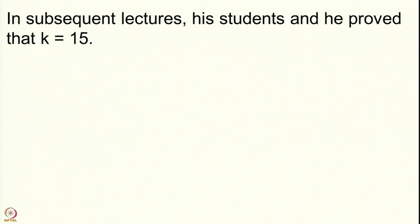Conway proposed this in his class, and remarkably in subsequent lectures he and his students proved that k is 15. They proved that if a positive definite form represents all integers from 1 to 15, then it is universal. For this computation you don't even need computers — if k were 100, you might need a computer, but checking only up to 15 is doable by pen and paper. This is a very remarkable theorem called the Conway–Schneeberger theorem.